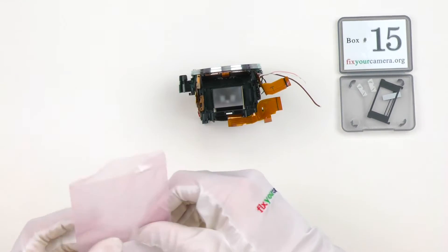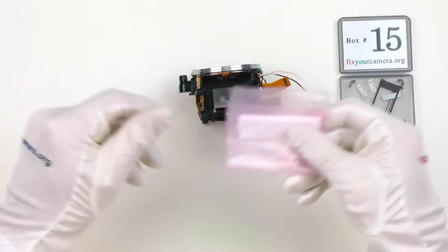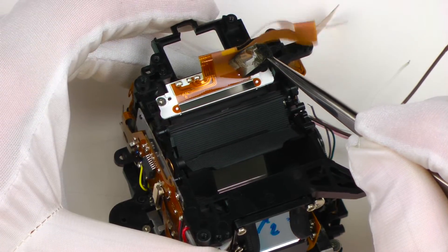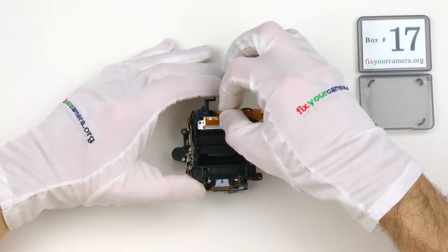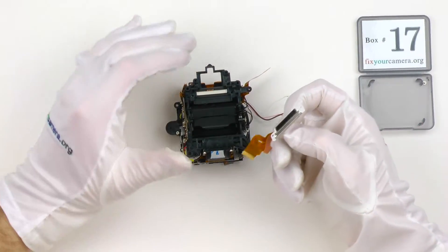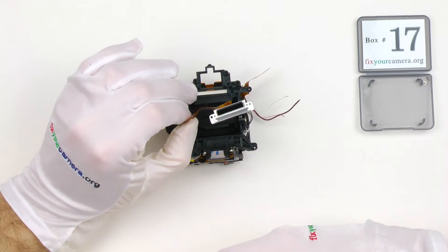This one is also easy to scratch, so it's going into a bag. Another LCD screen. This one is showing some information at the bottom of the viewfinder if you look through it. For example the aperture, shutter speed, battery status and this type of stuff.